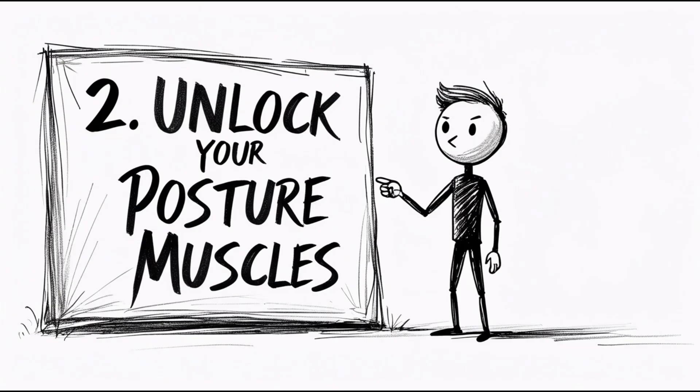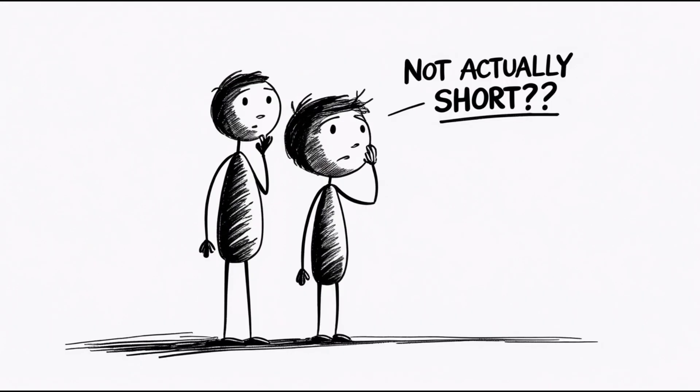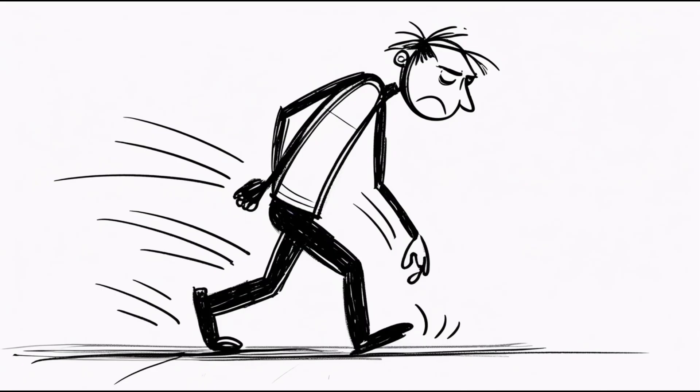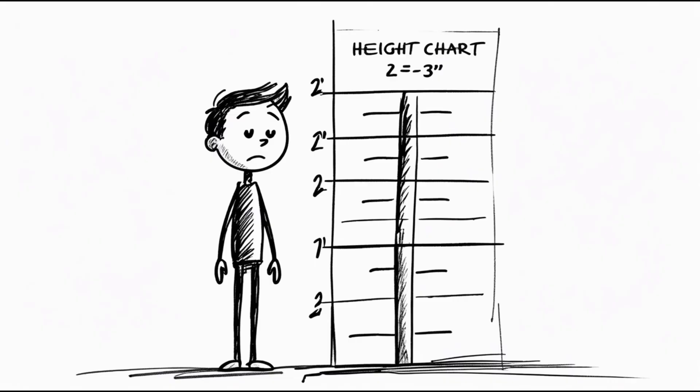Two. Unlock your posture muscles. Here's a harsh truth. Most people aren't actually short. They're just bent. Rounded shoulders, forward head posture, weak glutes. It's like walking around with your body permanently hunched.